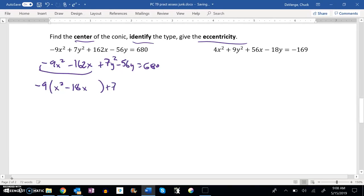Factor a 7 out of the y's. That should have been a y squared. Y squared minus, that should be an 8.